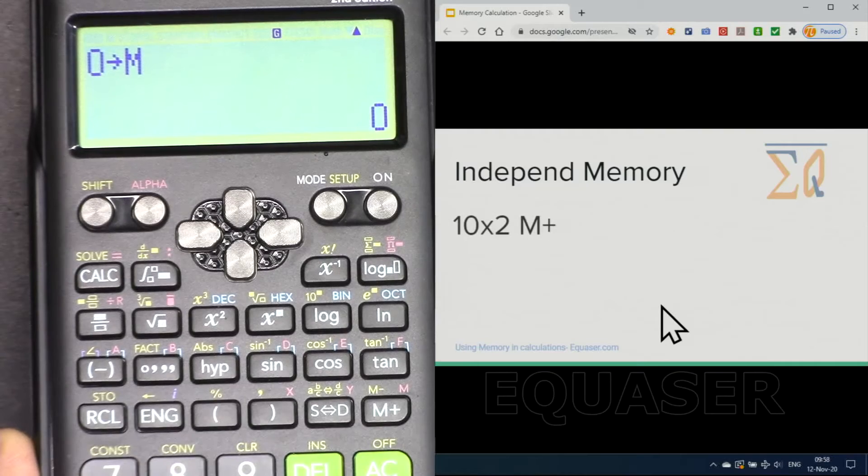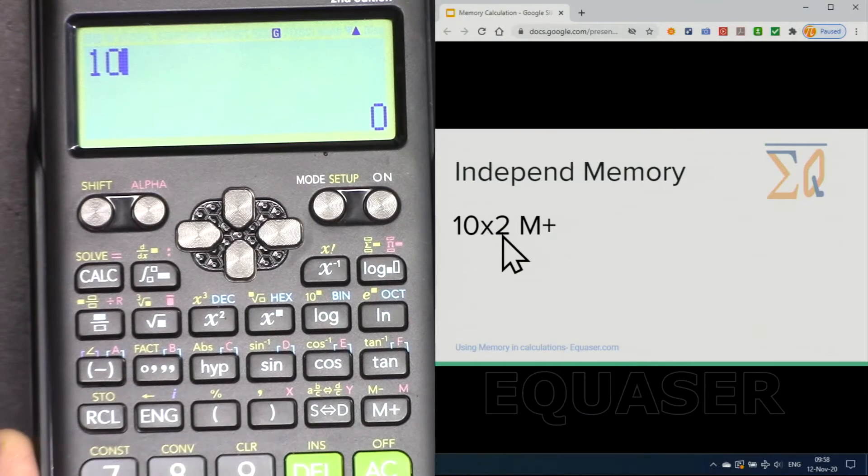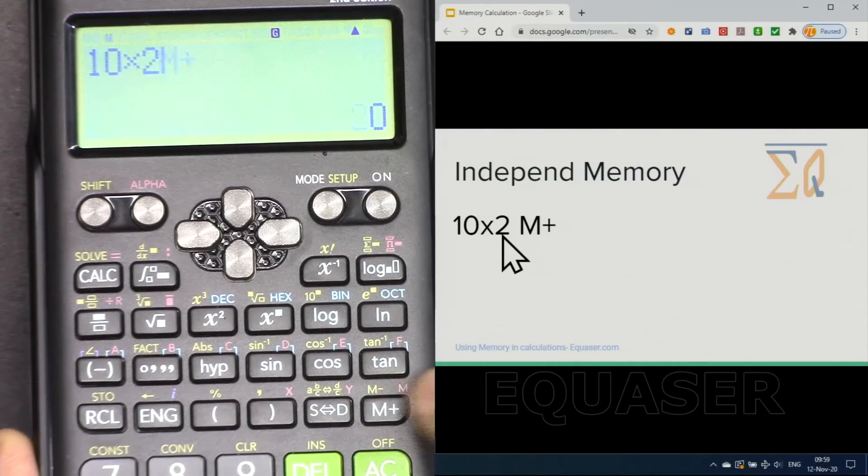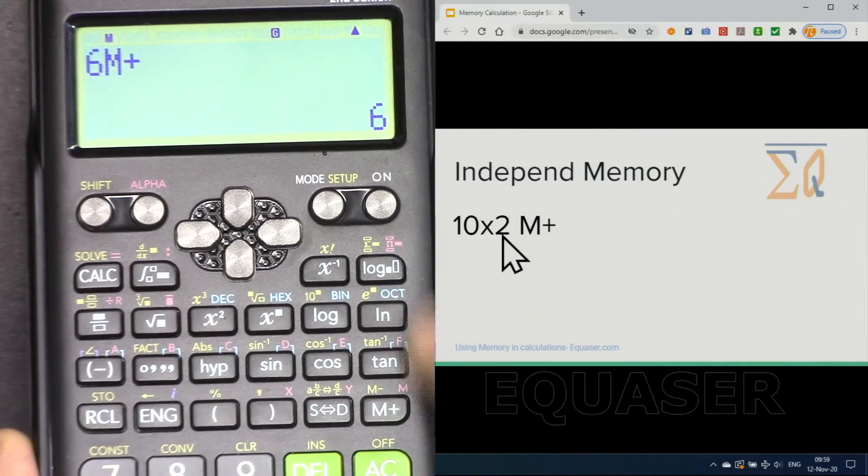At the same we can use our memory. Let's say 10 times 2 and to add it to memory, 10 times 2 and then add. And then you can say 6, add it has been added.